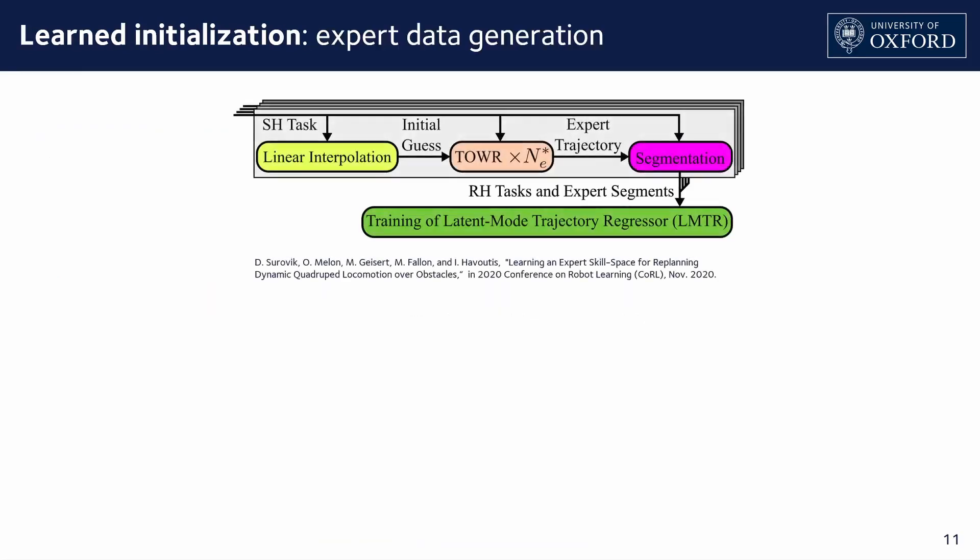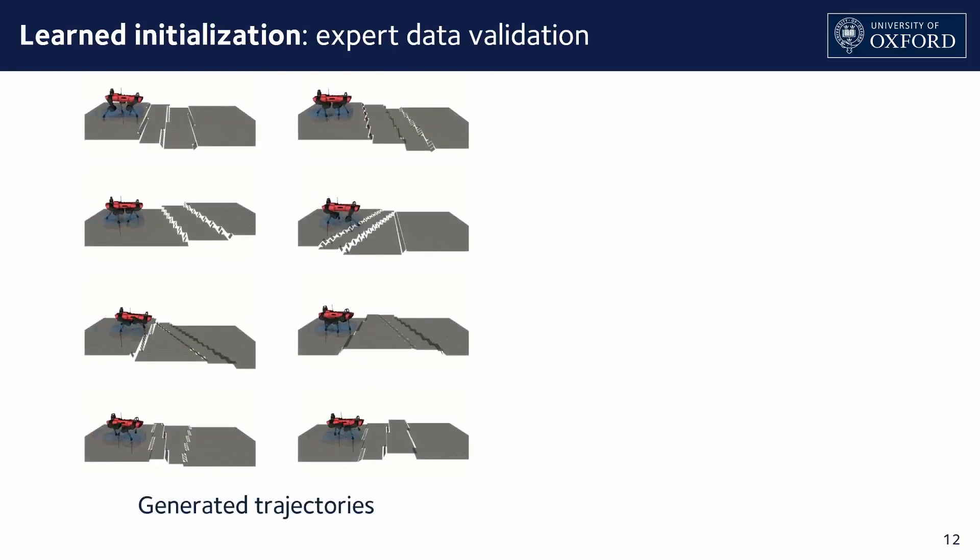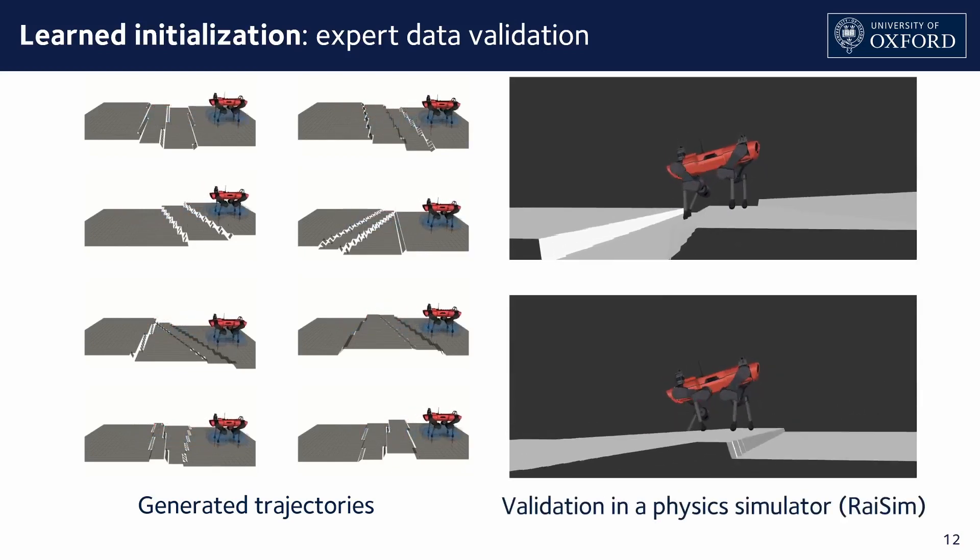The second initialization scheme is the latent mode trajectory regressor. We have introduced it in our earlier work. The regressor is trained using expert data and is used to infer near-optimal dynamic segments. Consider a scenario where the robot is asked to cross three obstacles between some initial and final stationary poses. When generating the expert data, this stationary horizon problem is initialized using linear interpolation. It is solved to produce an optimal trajectory. Here are some examples of the generated trajectories on steps of random depths, heights, and orientations. We use a realistic physics simulator to validate the viability of these motions.